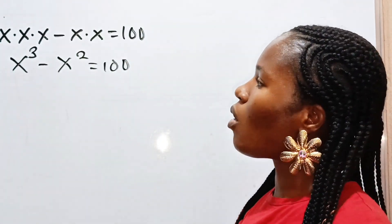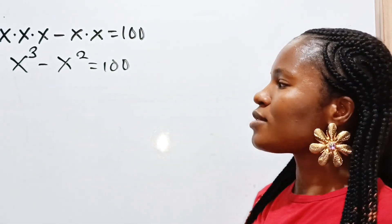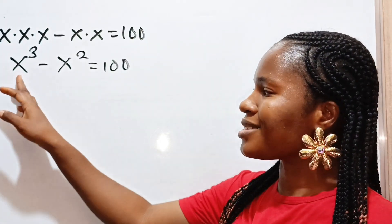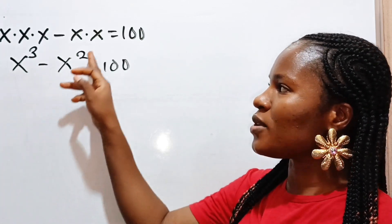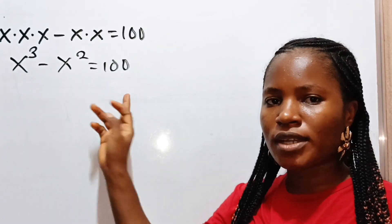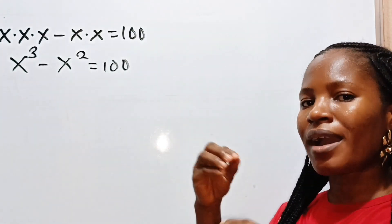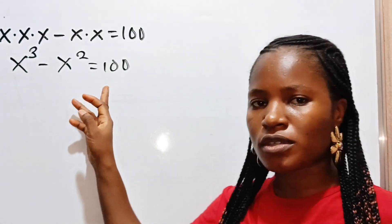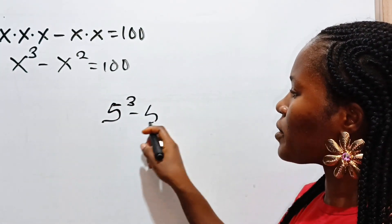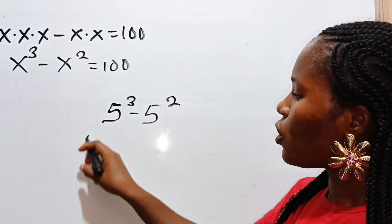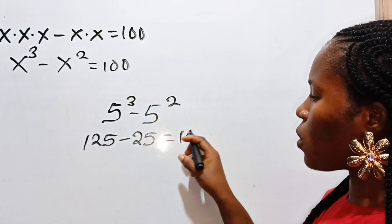Now I want us to note that x can be any number. This question is saying that a certain number raised to the power of 3, minus that same number raised to the power of 2, equals 100. Because when you say 5 to the power of 3 minus 5 to the power of 2, you'll have 125 minus 25, and this is also equal to 100.